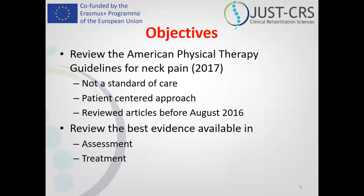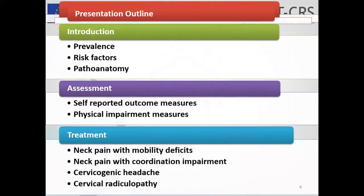Hopefully you'll find this webinar useful. In this presentation, we'll talk about prevalence, risk factors, pathoanatomy, and in the assessment we'll talk about self-reported outcome measures and physical impairment measures. For treatment, we'll talk about the classification — neck pain with mobility deficits, neck pain with coordination impairment, cervicogenic headache, and cervical radiculopathy.